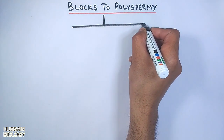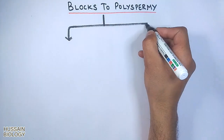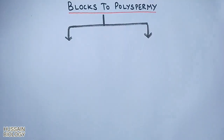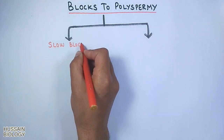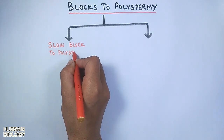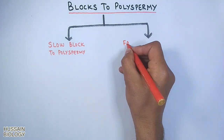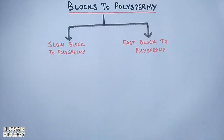The blocks to polyspermia are achieved via two pathways: slow blocks to polyspermia and fast blocks to polyspermia.